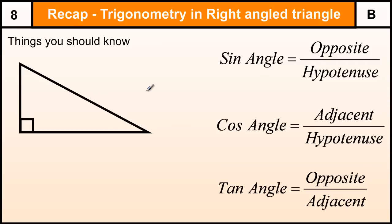Trigonometry in a Right Angle Triangle — a Grade B GCSE topic, or Level 8 Key Stage 3 topic.